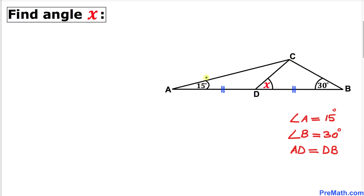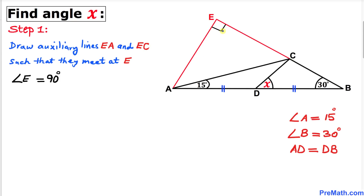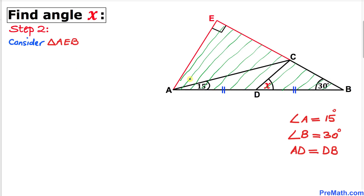The very first thing we are going to do is focus on the 30-degree angle and take advantage of it. We will draw some auxiliary lines — extending line BC all the way to some point E, and then connecting A to E such that we get a 90-degree angle. Here is our nicer-looking diagram with angle E equal to 90 degrees.